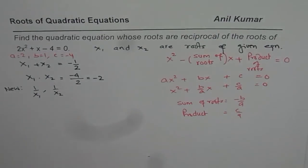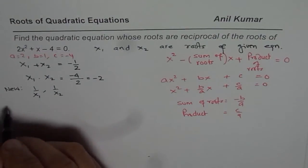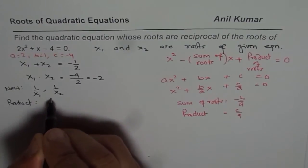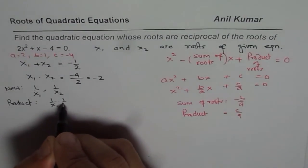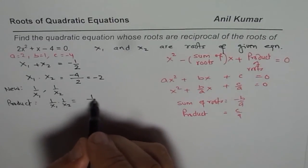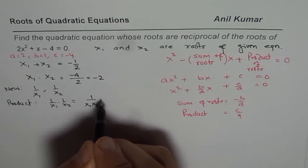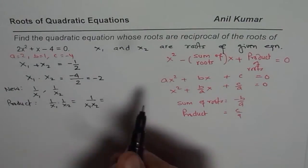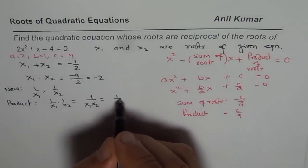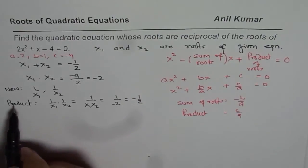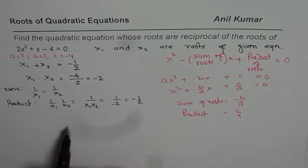If these are the roots, then what is their product? The product is 1 over x1 times 1 over x2, which is 1 over (x1 times x2). Now, we know x1 times x2 is minus 2, so this is 1 over minus 2, or minus one-half. So the product of the new roots is minus one-half.